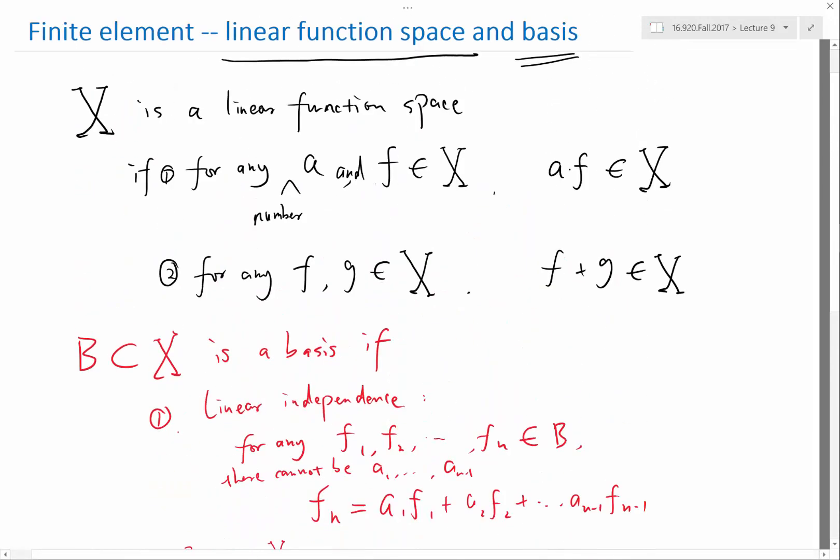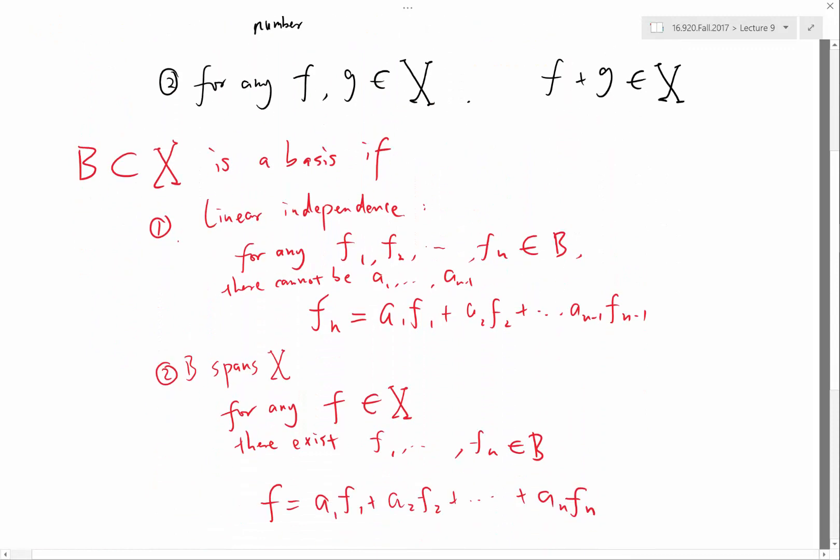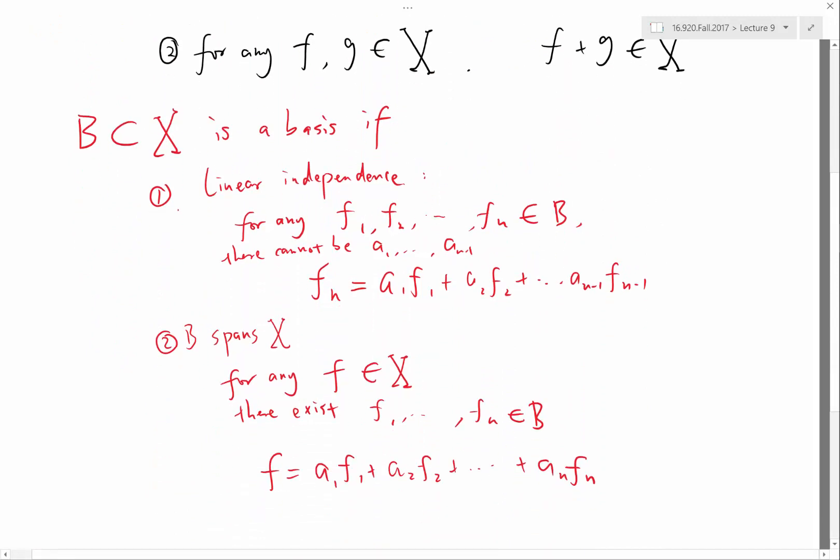So the linearity of the function space and the basis essentially enables us to represent any function F inside the space X using a bunch of numbers. So if we have a space and if we have a basis, then for any function F, that F is uniquely identified by a1, a2, et cetera, to an. So this is a way to represent functions using numbers. Computers cannot really store functions, because functions are essentially infinite dimensional. But computers are good at storing numbers. So this is a way to replace a function with a bunch of numbers.